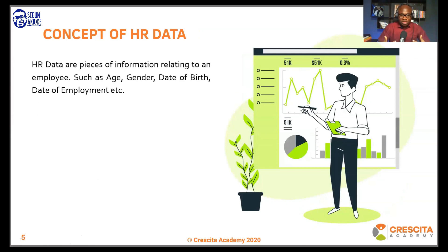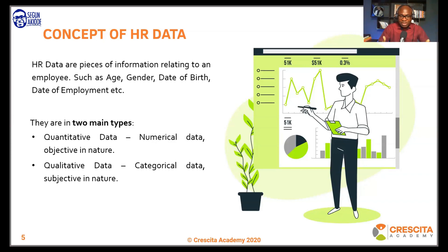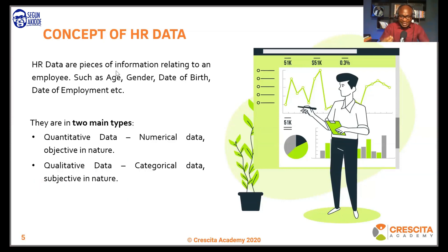The question now comes to mind: what do we mean by HR data? HR data are pieces of information relating to an employee, such as age, gender, date of birth, date of employment, and similar details. There are two main types of data: quantitative data, which is numerical and usually objective, and qualitative data, which is categorical or subjective in nature. An example of quantitative data is age — it is objective, defined by date of birth.